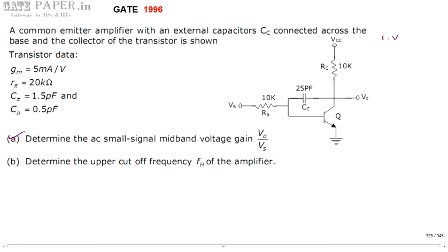First: DC voltages must be grounded — VCC should be taken as zero. VCC is a DC voltage source, so it doesn't change even when you apply an AC signal. AC signal is nothing but small variations, and those small variations make no effect on the DC voltage. So there will be no variations in the DC voltage, meaning VCC should be connected to ground.